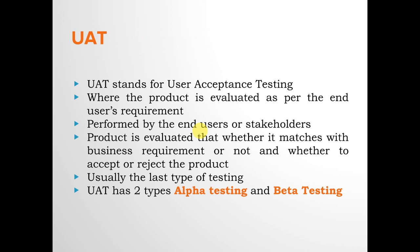UAT, or User Acceptance Testing, is usually the last phase of testing. The product is evaluated as per the end user's requirements and is performed by end users or stakeholders. It determines whether the product matches the business requirements and whether to accept or reject the product. UAT has two types: alpha testing and beta testing.